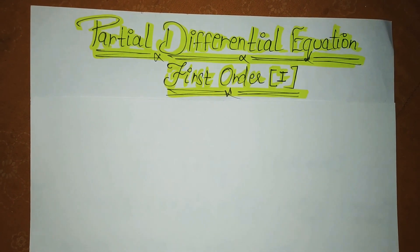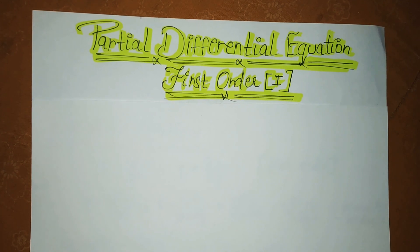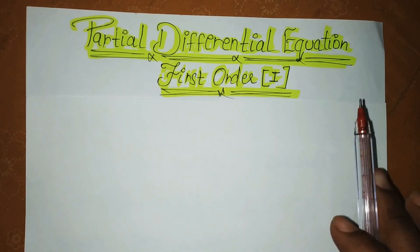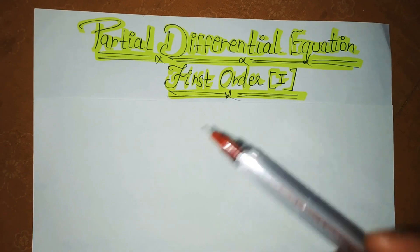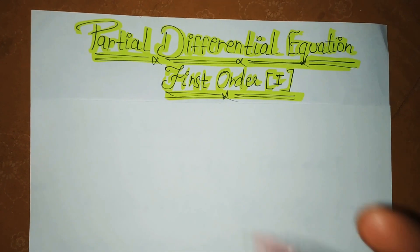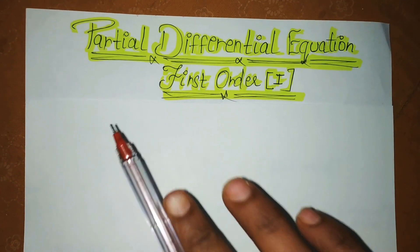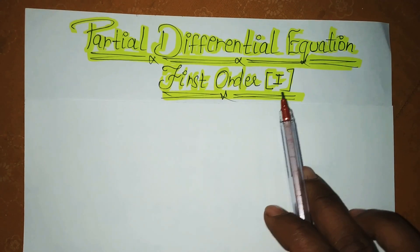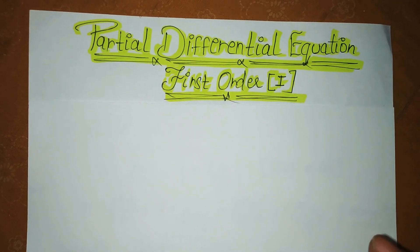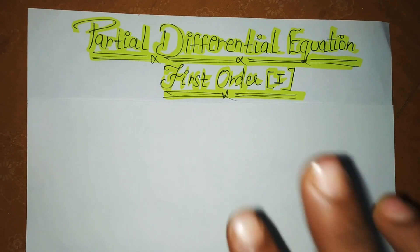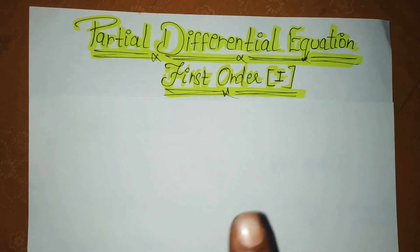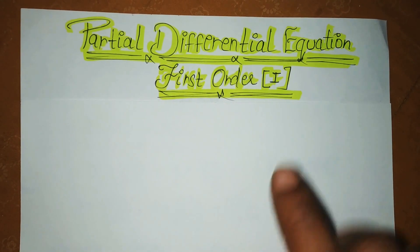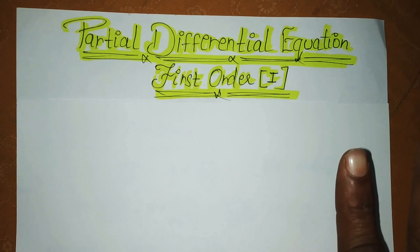Students, in your book, partial differential equations may be written in complete word form or in Roman language notation. Both are the same — you don't need to be confused. If it's written in either type, both are same.